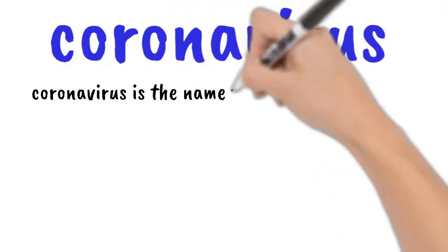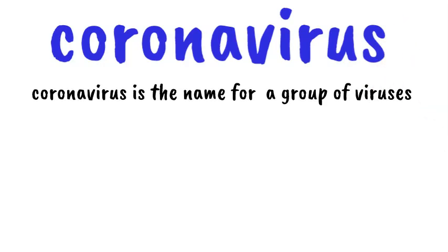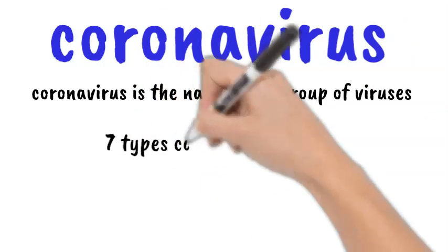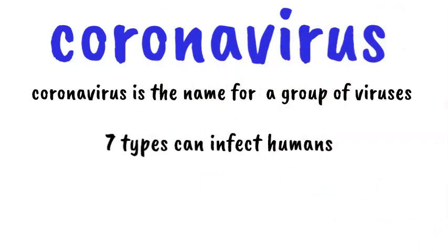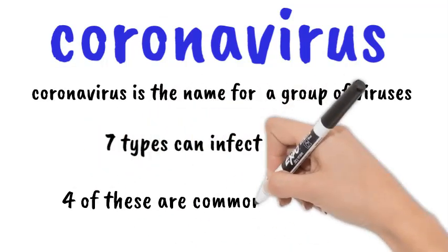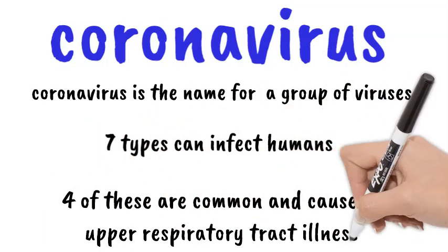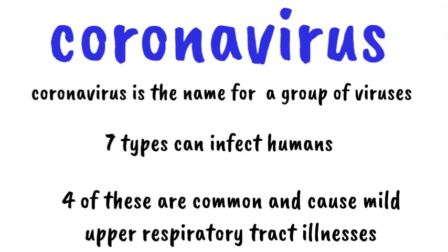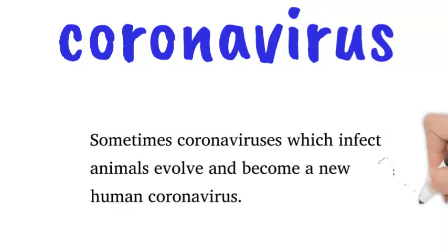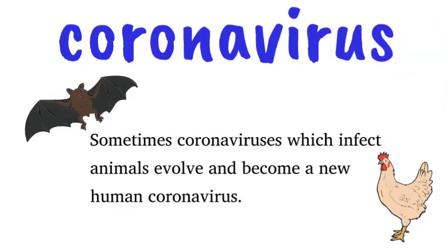Coronaviruses were first identified in the mid-1960s. They infect animals, and some can infect humans. There are seven types which can infect people, including the newest coronavirus, which we are currently seeing. Sometimes coronaviruses which infect animals evolve and become a new human coronavirus.